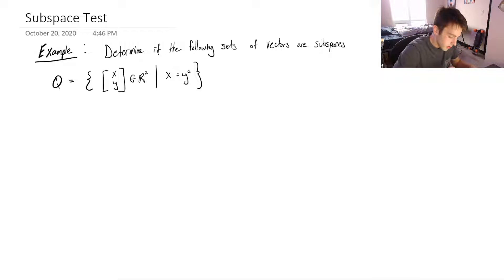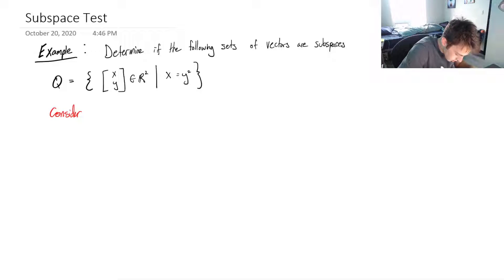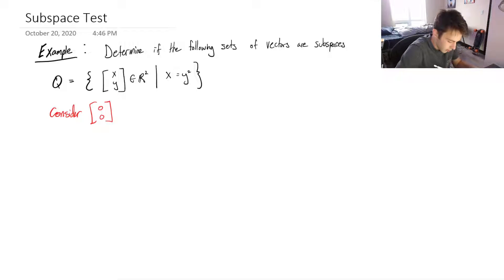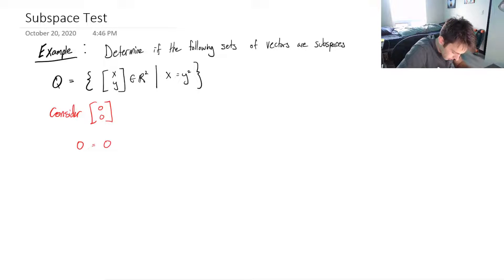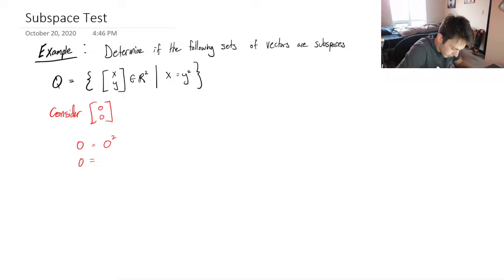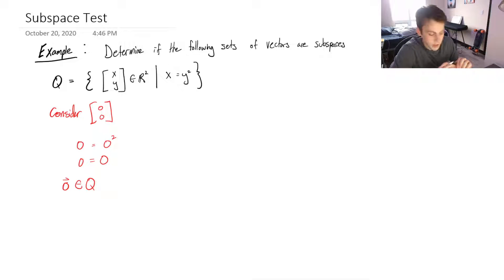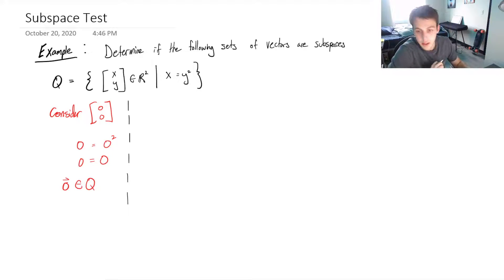Let's consider (0, 0), the zero vector in R². The x component is 0 and the y component is 0, so you can clearly see 0 squared equals 0 — we get 0 = 0. So the zero vector is in Q, and the first condition of our subspace test is met. We'll have to check the other conditions.